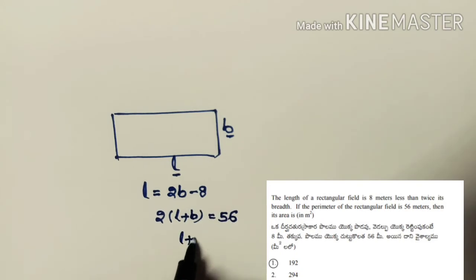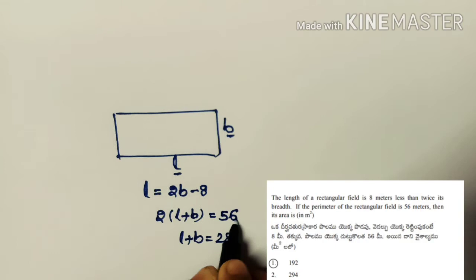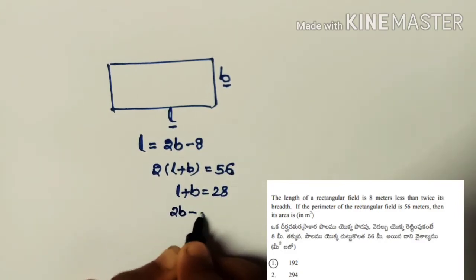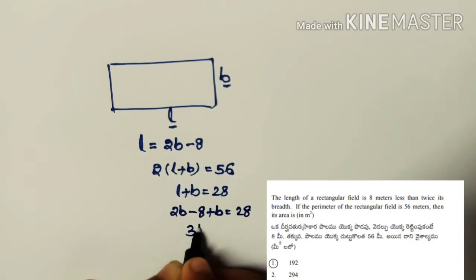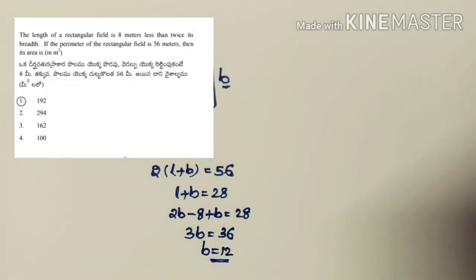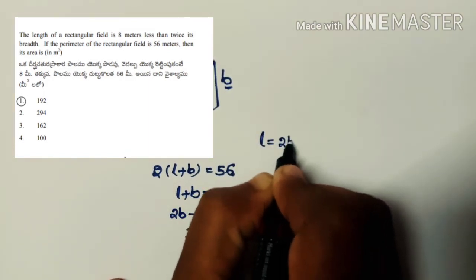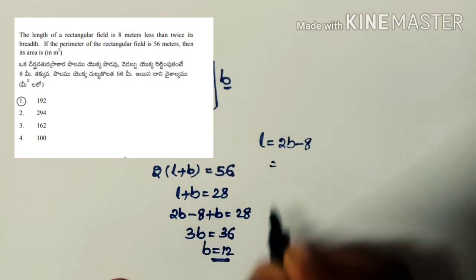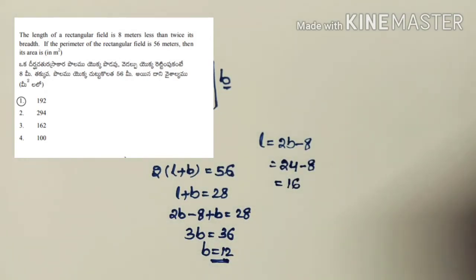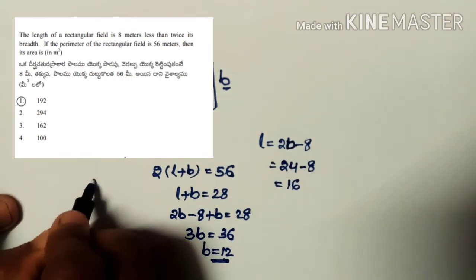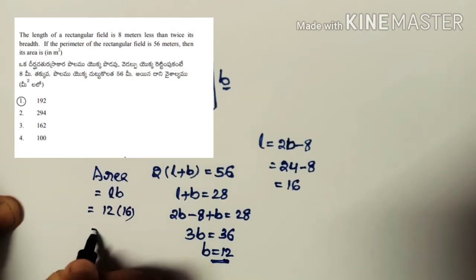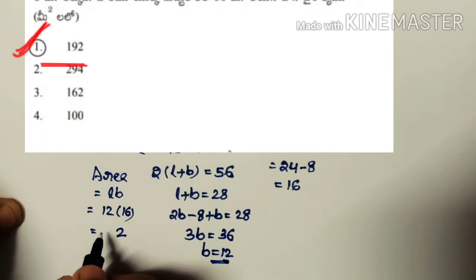Substituting l = 2b − 8 into l + b = 28: 2b − 8 + b = 28, so 3b = 36, giving b = 12. Then l = 2(12) − 8 = 24 − 8 = 16. Area = l × b = 16 × 12 = 192 sq meters, which is the first option.